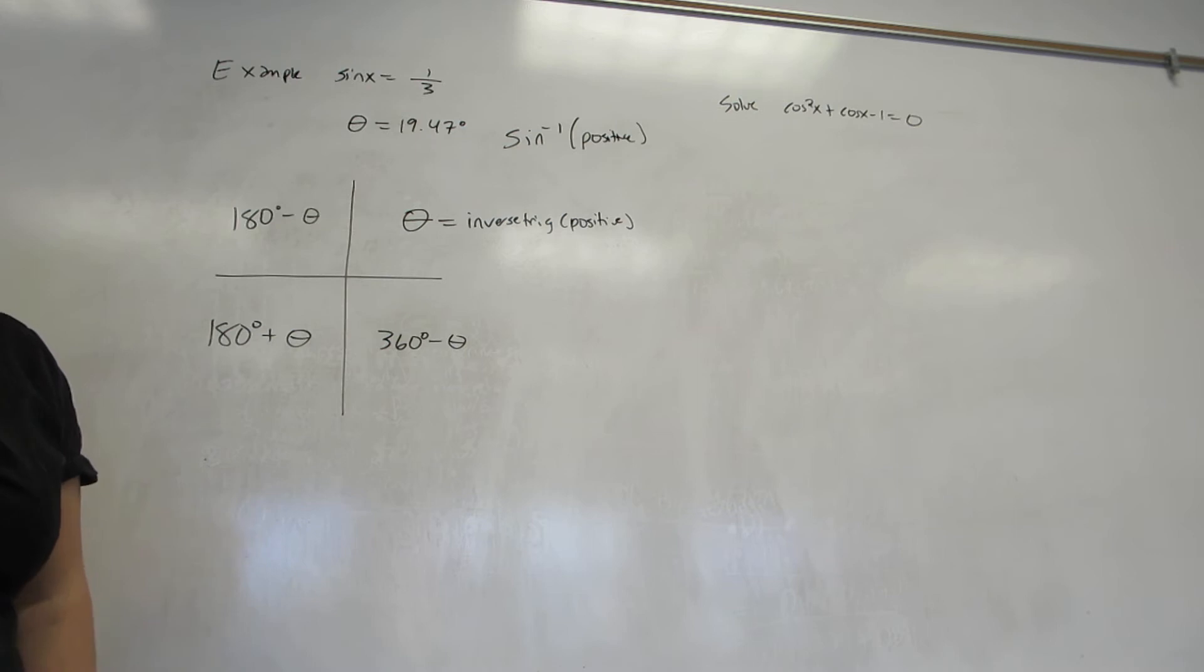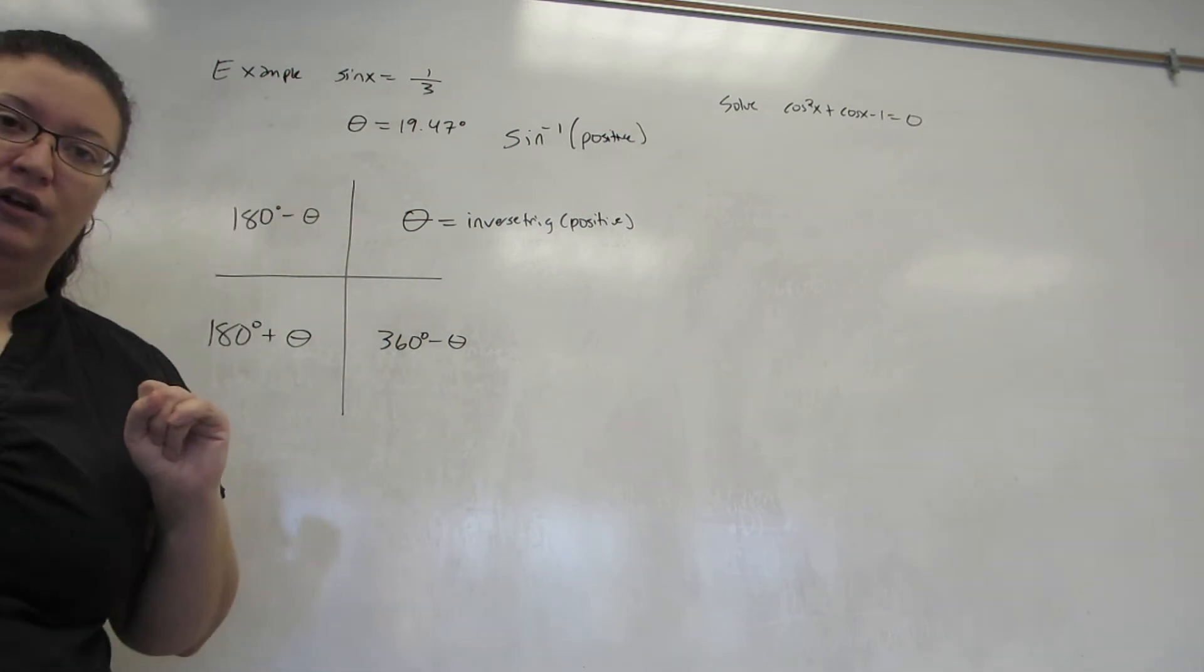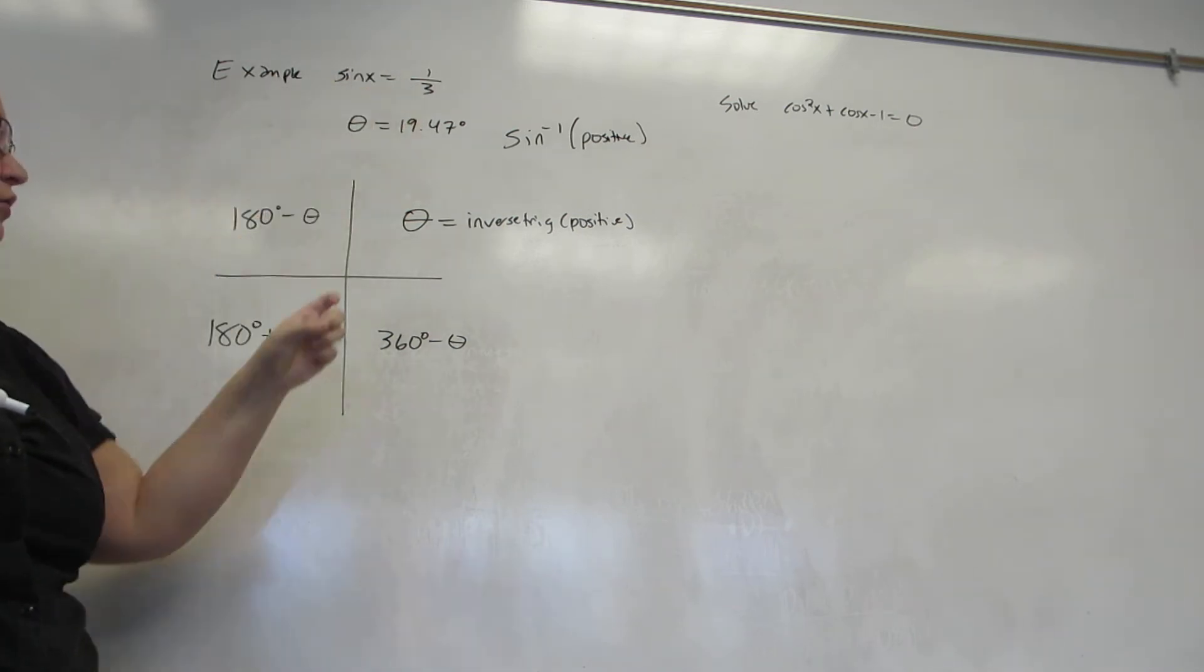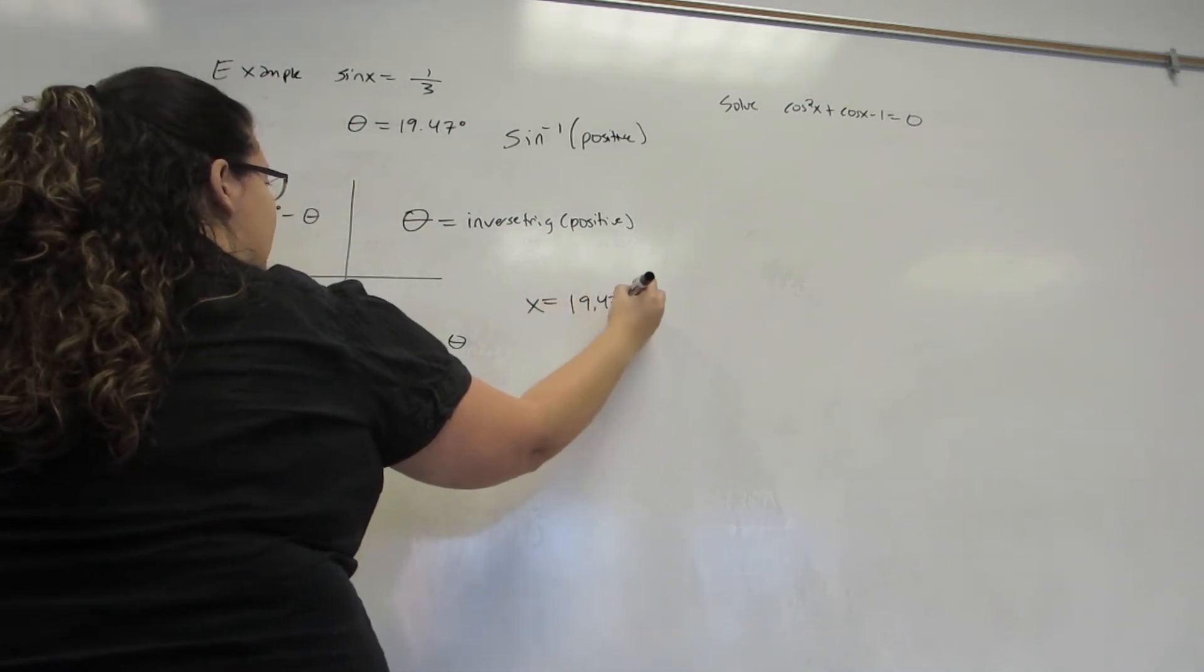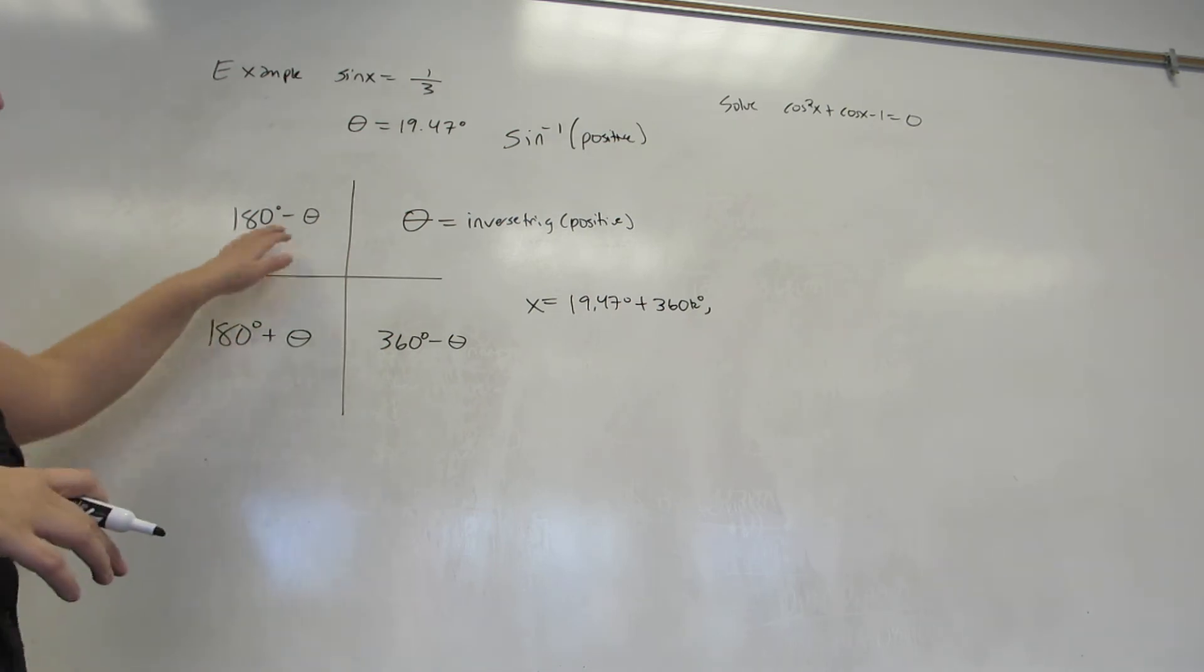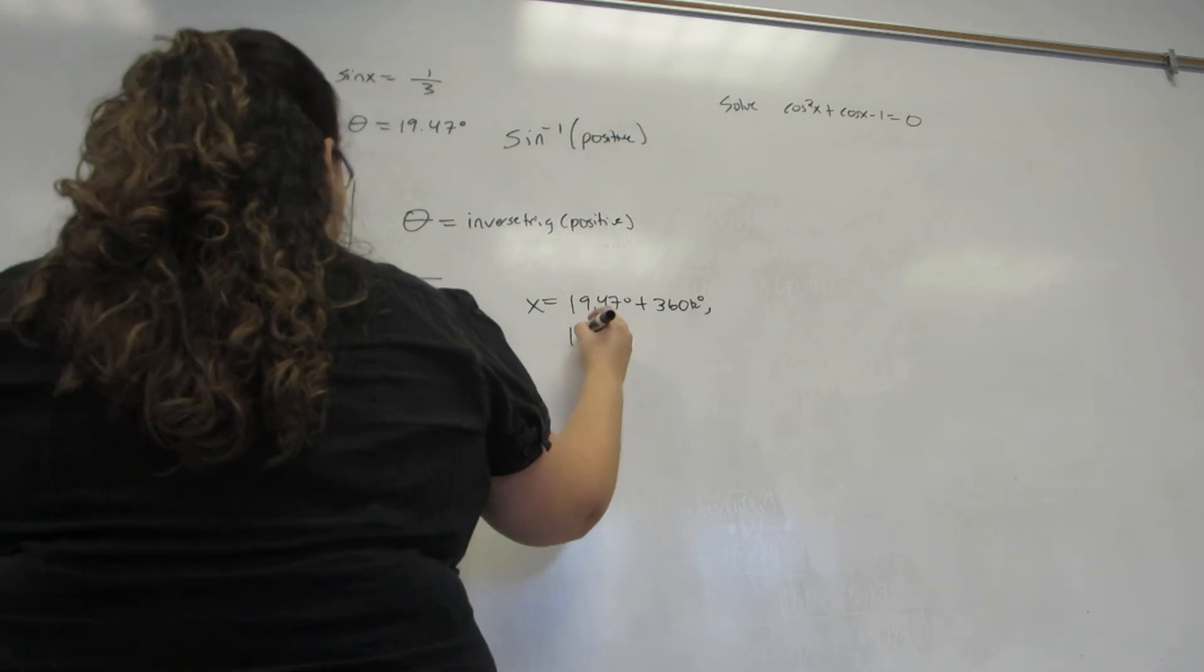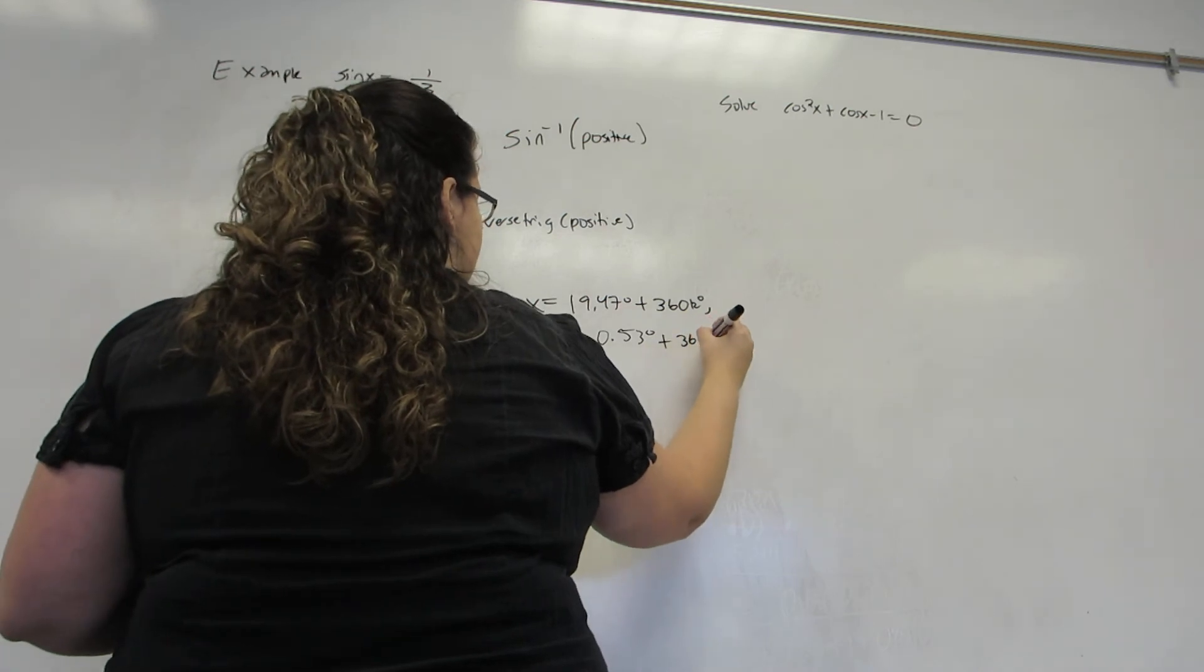So, here's how we do these problems. I want to know when sine of x equals one-third. I do sine inverse of positive one-third in my calculator. I get 19.47 degrees. Then I say, which two quadrants is sine positive in? Answers 1 and 2. So, my actual answers for x are that 19.47, because that's just already the quadrant 1 answer, plus 360k, and 180 minus 19.47, which is 160.53 degrees, again, plus 360k.